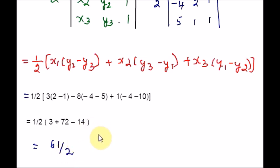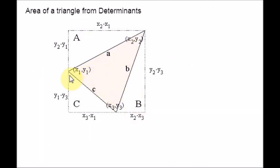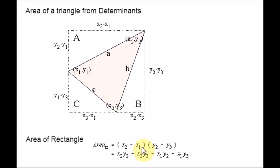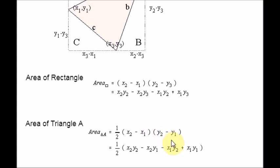Now let me show you how to derive the area of a triangle formula. Please look at this figure — a triangle inside a square or rectangle. We know that the area of a rectangle is length times width. If I distribute or FOIL, I will get X2·Y2, X1·Y2, X2·Y3, and X1·Y3. This is the area of the rectangle from this figure. Now, the area of triangle A would be one-half times base times height, which is half the area of the rectangle.